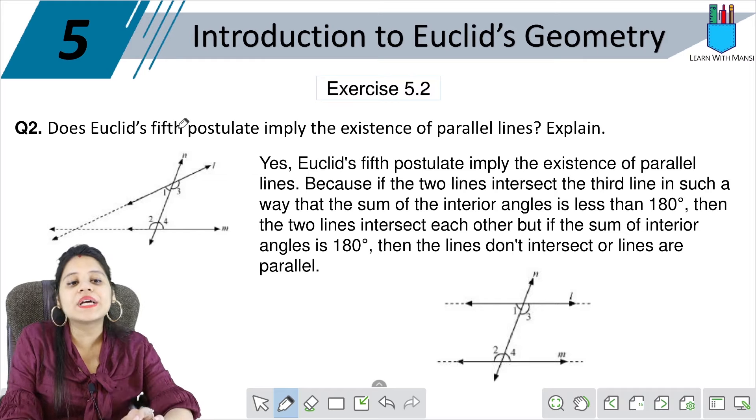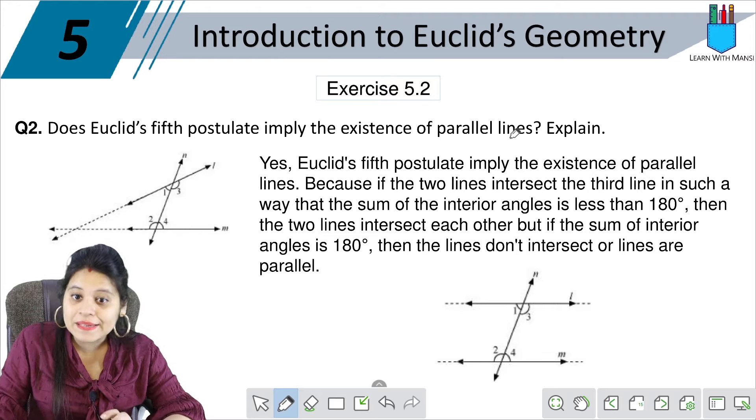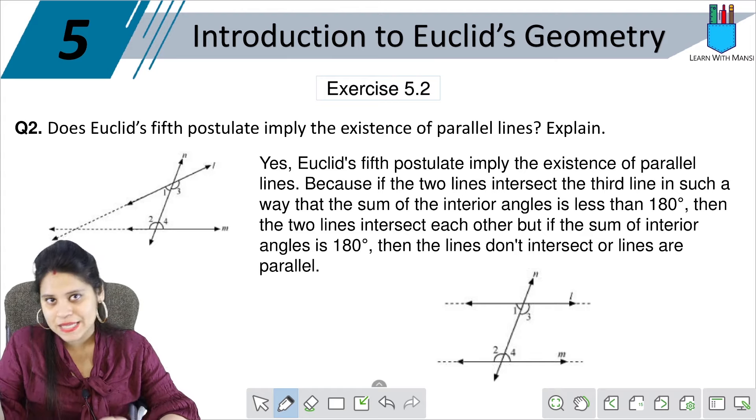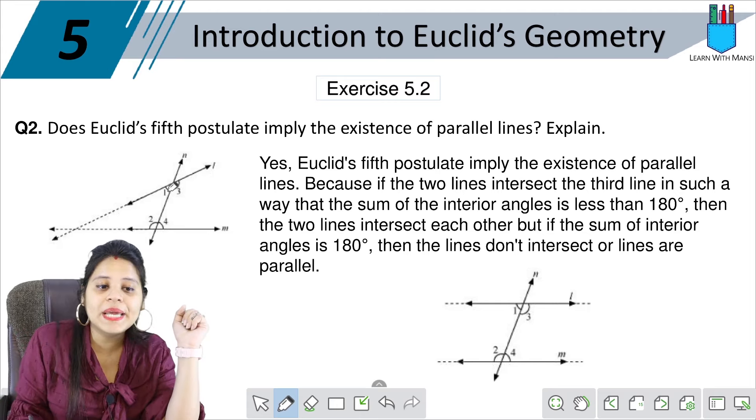Question two says: Does Euclid's fifth postulate imply the existence of parallel lines? What is the fifth postulate? It also explains parallel lines in some way. How does it explain? Look, now we have studied this.